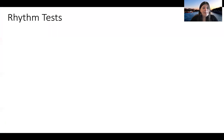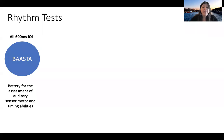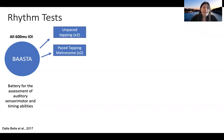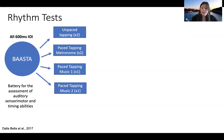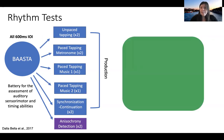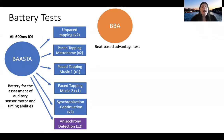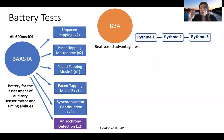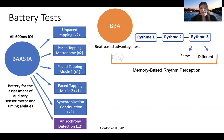For our rhythm tests, we used the production tasks from the BASAL battery: unpaced tapping, paced tapping to a metronome, paced tapping to two different types of music, and synchronization continuation, as well as the anisochrony detection task, which was a beat-based perception task. For the production tasks, participants tapped on a tablet using the microphone to record taps for good precision. We also ran a beat-based advantage test, the BBA, where participants listened to three rhythms — the first two identical — and decided if the third was the same or different. This was our memory-based rhythm perception task.